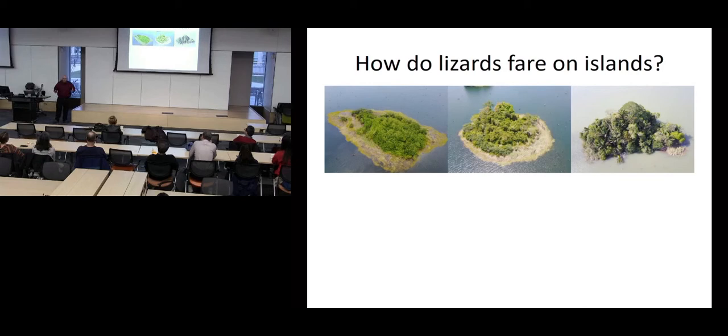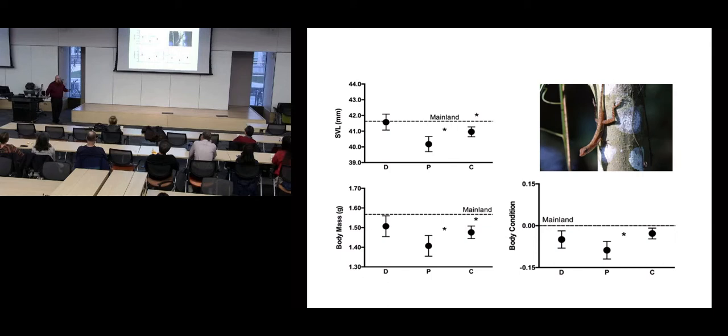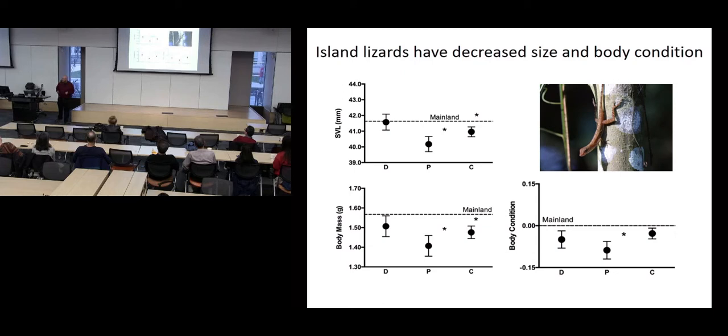How do these lizards do on these islands — all of which are hotter, drier, and more variable than the mainland? We looked at how this impacted their body size and body mass. On all of these islands they are smaller than on the mainland — on all islands they have less mass. If you calculate a body condition residual, for the same body size they tend to be skinnier. This is consistent with these islands being a little bit harder place to make it — they have decreased size and body condition.